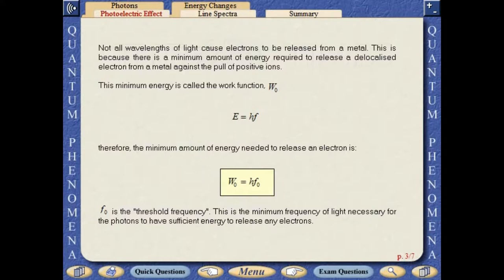F0 is the threshold frequency. This is the minimum frequency of light necessary for the photons to have sufficient energy to release any electrons.